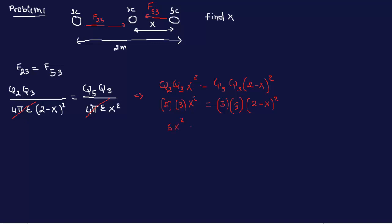So we have 6x squared equals 15 times 2 minus x squared. Now 2 minus x squared, we're just going to factor the values here. So we have 4 minus 4x plus x squared. We're using that formula where you have a minus b to the power of 2, a squared minus 2ab plus b squared. So a here is 2 and b is x.